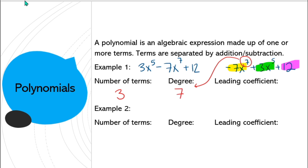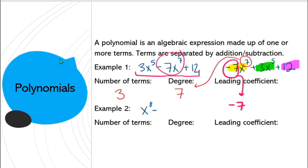The leading coefficient is the number that goes with the first term — it's negative 7. Looking at another quick example: 8xˣ minus x¹² rearranged gives negative x¹² plus x⁸. Number of terms: 2. Degree: 12, the biggest exponent. Leading coefficient: negative 1, since there's a negative in front of x¹².